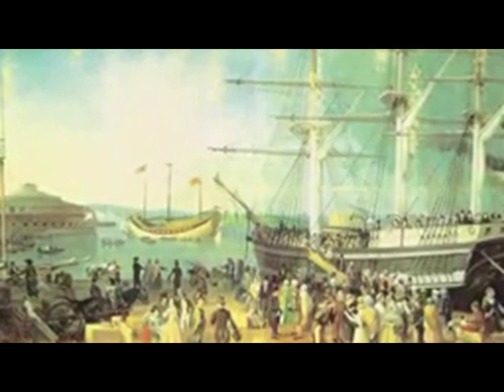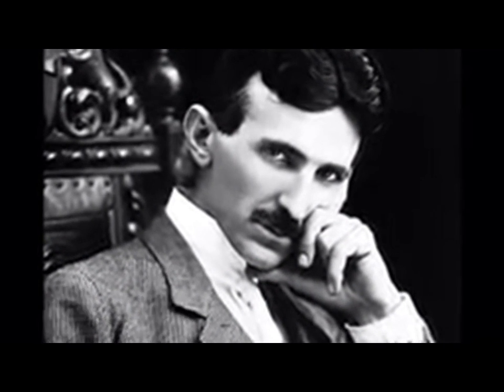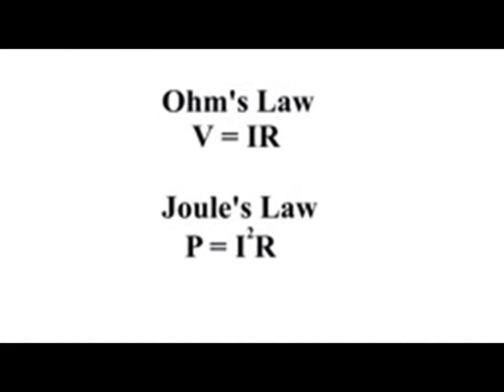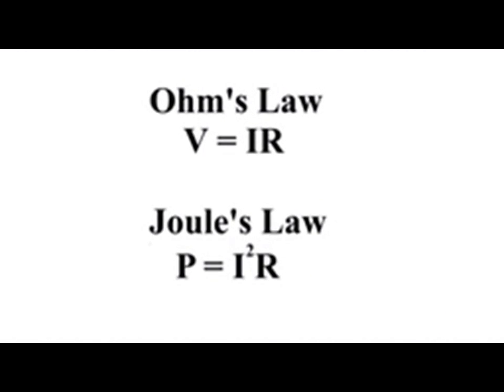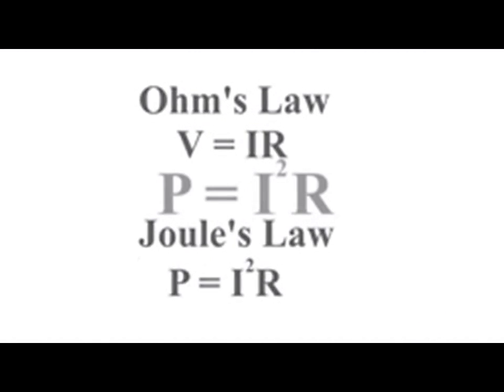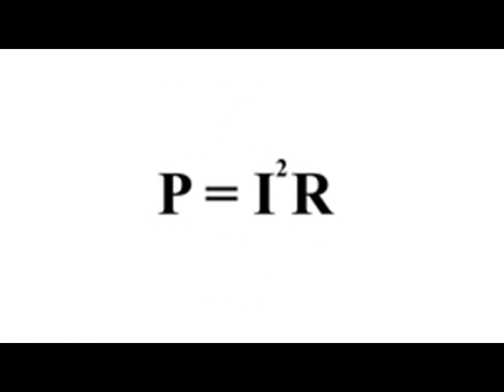Nikola Tesla, a Serbian electrical engineer, arrived in America in 1884, bringing with him the solution to Edison's problem. Tesla understood the science of the day, including Ohm's law and Joule's law — mathematical descriptions of the relationship between voltage, current, resistance, and power. Joule's law reveals Edison's problem: the formula P = I²R tells us that power lost when current flows in a wire equals the resistance times the current squared.